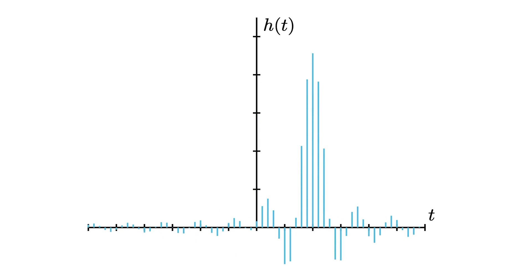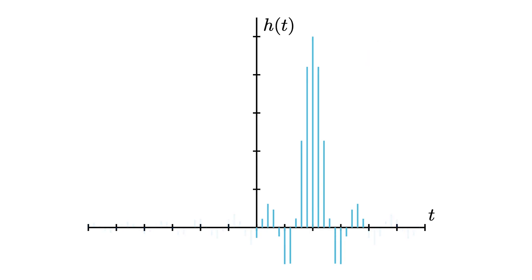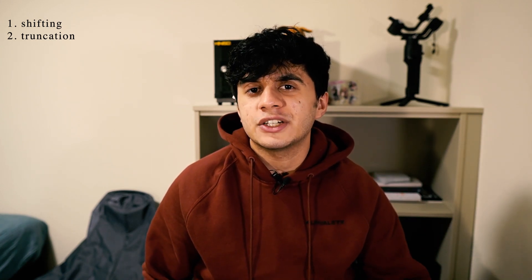Well, if you look at the time domain representation of the ideal filter, you can actually just shift it to the right a little bit so that the main lobe is in positive time, and then just chop off the ends to get rid of all negative times. This is broken down into two simple steps: shifting and then truncation, which is essentially just multiplication by a window function.